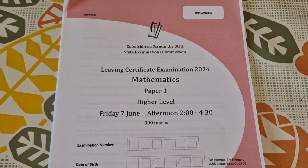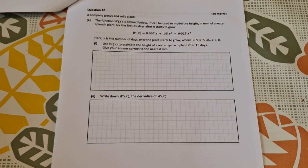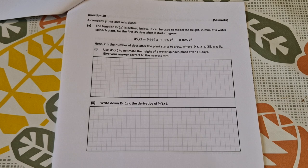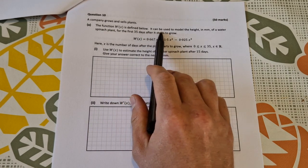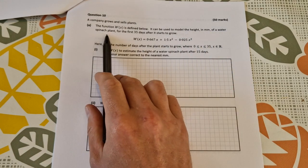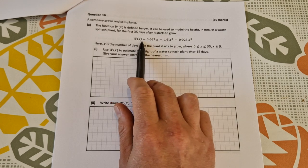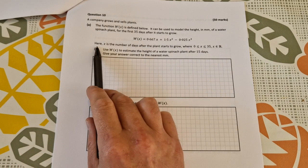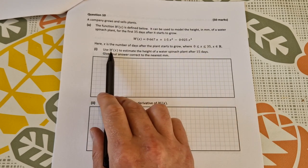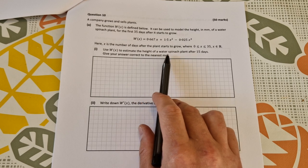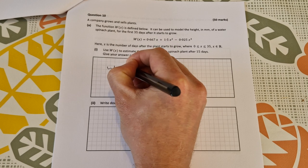This is the solution video to Leaving Certificate Higher Level Maths 2024, Paper 1, Question 10. A company grows and sells plants. The function w(x) is defined below and can be used to model the height in millimeters of a water spinach plant for the first 35 days after it starts to grow. Here's the function, it's a cubic function. X is the number of days after the plant starts to grow, where x is between 0 and 35. Use w(x) to estimate the height of a water spinach plant after 15 days.